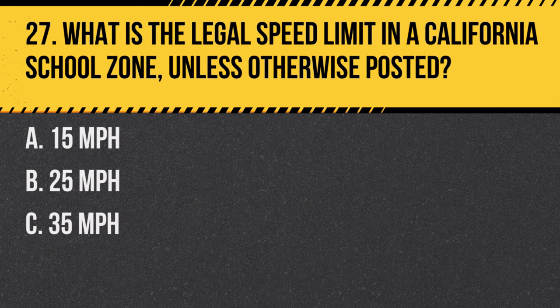Question 27. What is the legal speed limit in a California school zone, unless otherwise posted? A. 15 mph. B. 25 mph. C. 35 mph. Answer: B. 25 mph. The typical speed limit in a California school zone is 25 mph, but drivers should always look for posted signs indicating the limit.